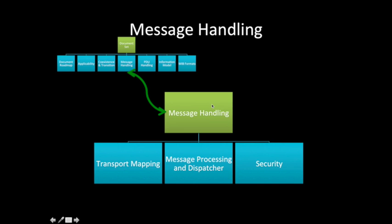Let's go through each pillar. The first pillar is message handling. In message handling, the protocol defines how the transport mapping will work over UDP, IPX, or other transports. It also covers message processing, the dispatcher, and the security model.